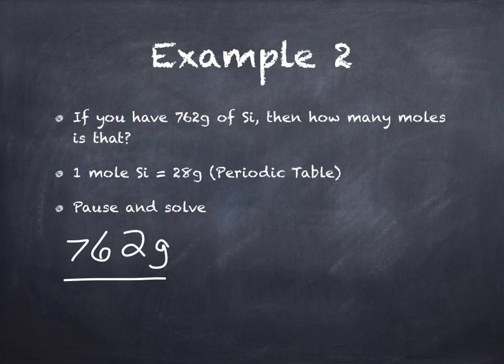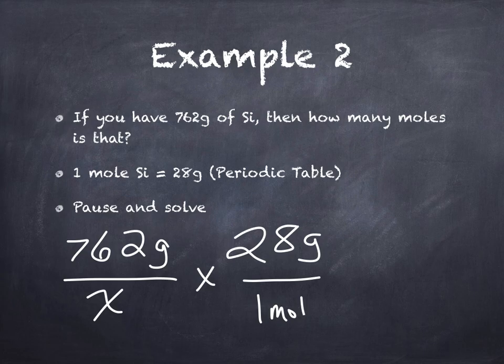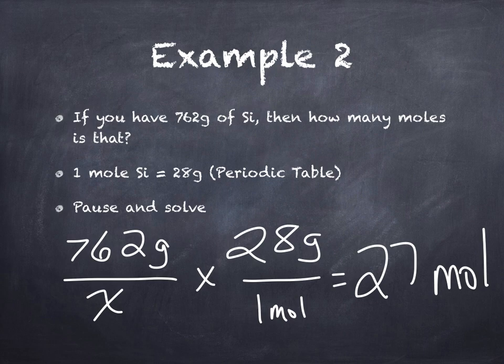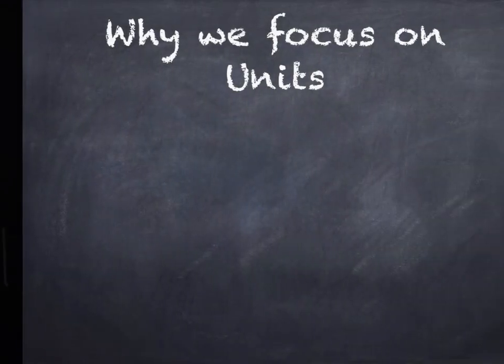So hopefully you paused. Here we go. Basically, 762 is to x as 28 is to one mole, 28 grams. Take a moment to verify grams are on the same row. They are. Notice my unknowns on the left. It doesn't matter. It doesn't matter where your unknown is as long as your units are on the same row. Cross multiply 762 times 1 divided by 28. You get the final answer of 27 moles.